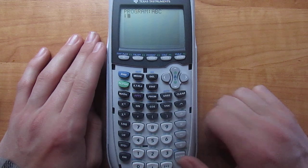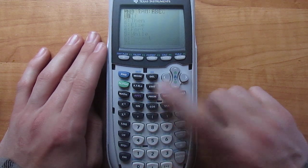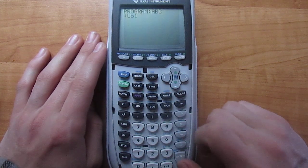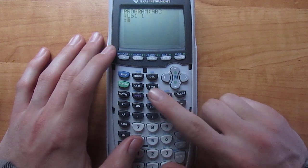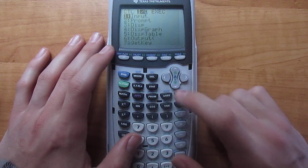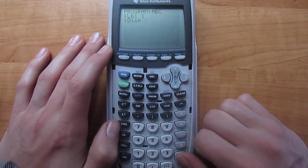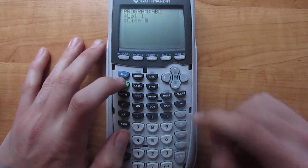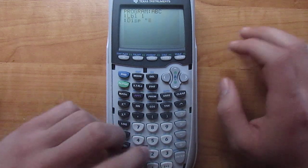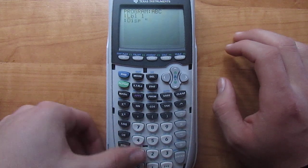Alright, so once you've done that you hit program, then 9, then 1, then hit enter, then hit program, right arrow, 3, then alpha plus, and then hit 16 ones and zeros.